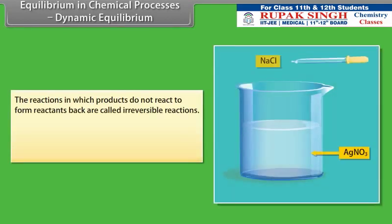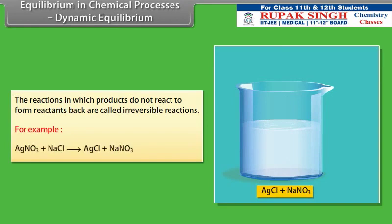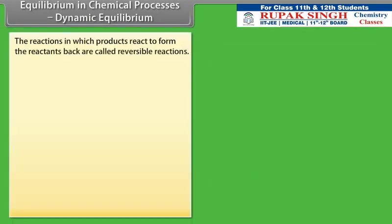The reactions in which products do not react to form reactants back are called irreversible reactions. For example, silver nitrate reacts with sodium chloride to give silver chloride and sodium nitrate. The reactions in which products react to form the reactants back are called reversible reactions, represented by two arrows pointing in opposite directions.